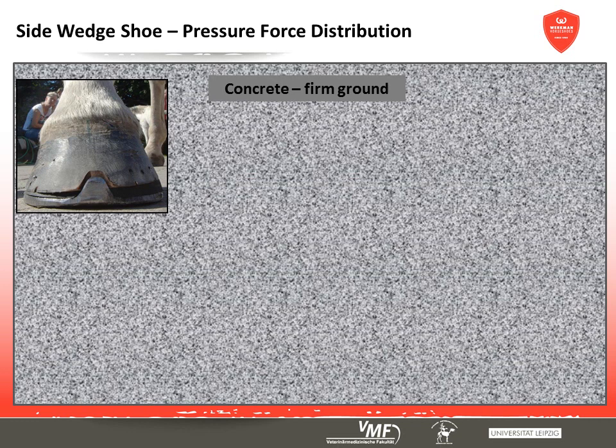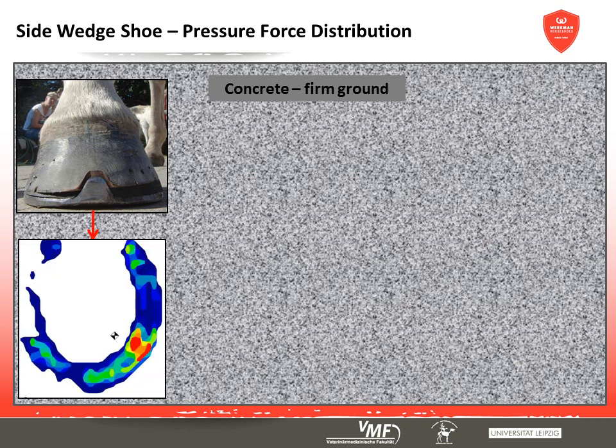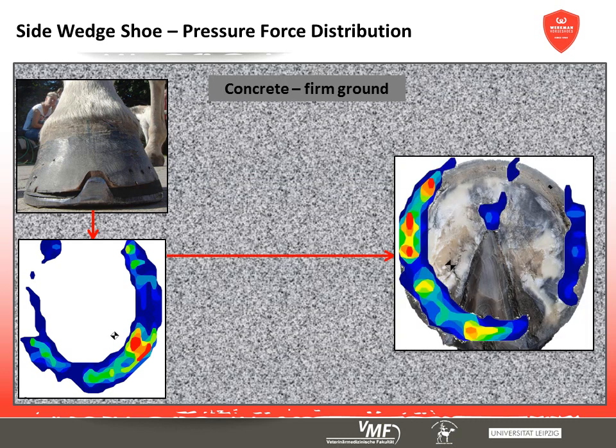Examining the pressure forces between horseshoe and ground on hard ground while walking — with a standard horseshoe used as comparison — the pressure distribution pattern of a side wedge shoe shows that considerably more vertical pressure originates from the raised branch. This is passed directly onto the hoof capsule, resulting in 10–20% more pressure on the lateral part of the hoof. Individual cases show a pressure increase of up to 90% on the elevated side.